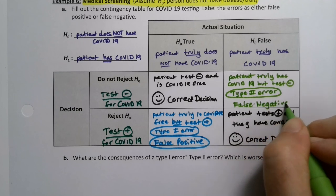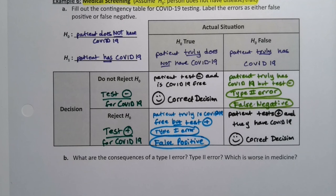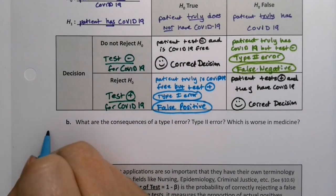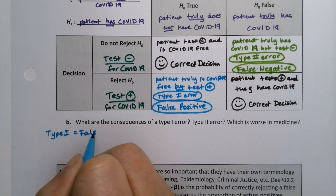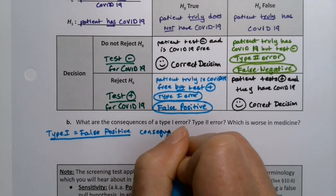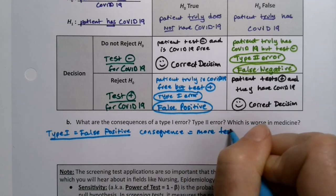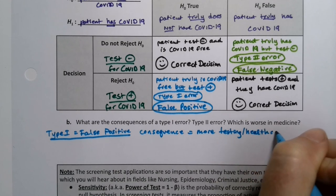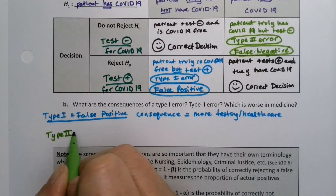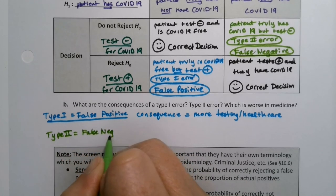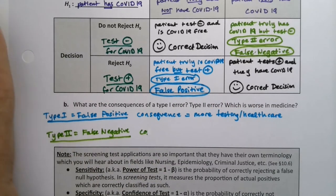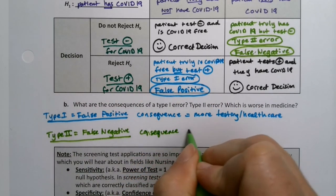The consequence of a false positive (type 1 error) is that the person gets more care and more testing, and eventually they'll hopefully figure out they don't really have it — though they could have something else causing the test result. The consequence of a false negative (type 2 error) is that the person walks around thinking they're fine, transmitting the disease to others.